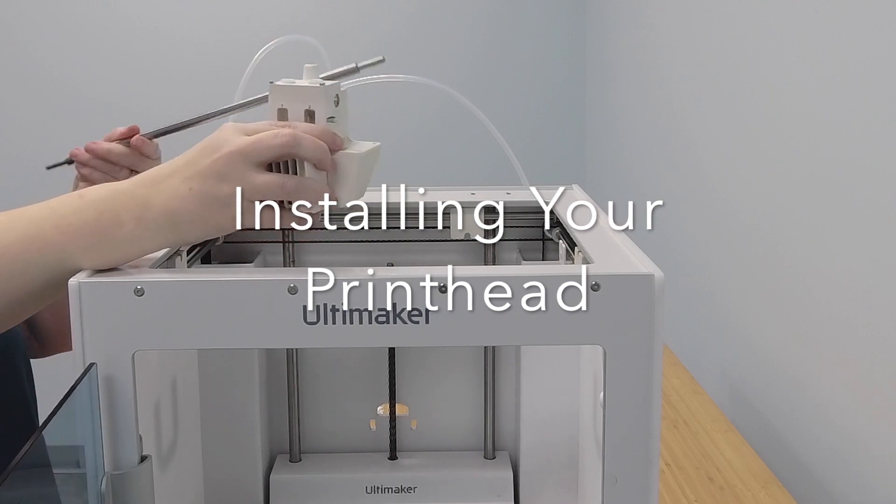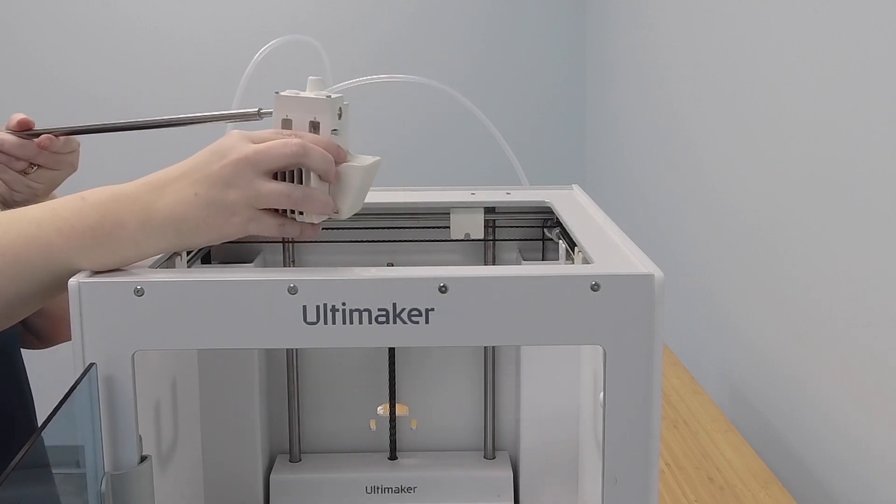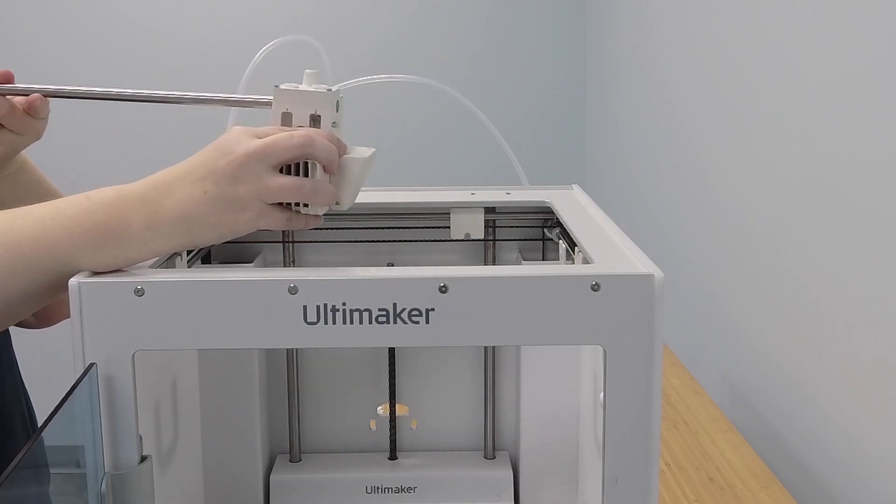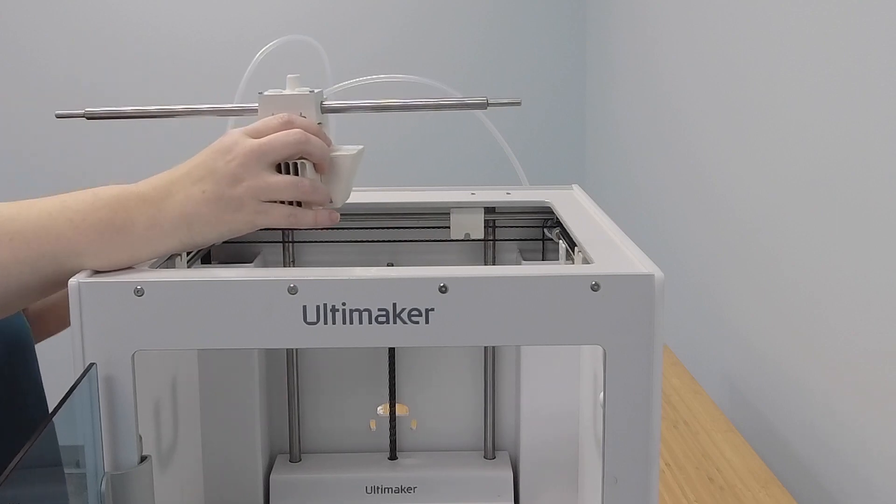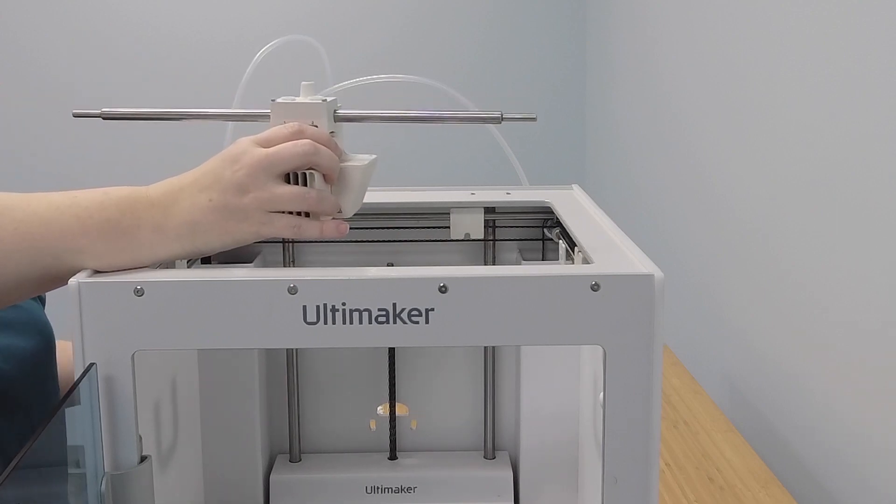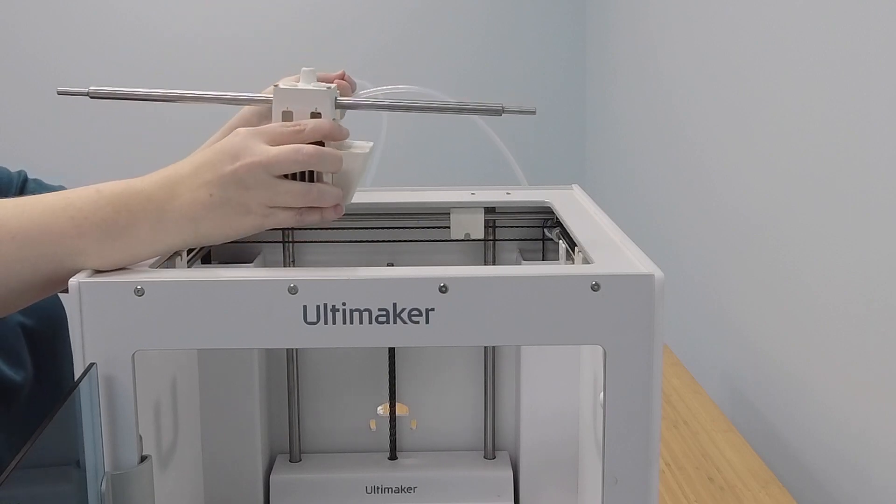Take your printhead and the long printhead shaft and slide it sideways through the printhead. Next, take your shorter printhead shaft and slide it back to front through the printhead.